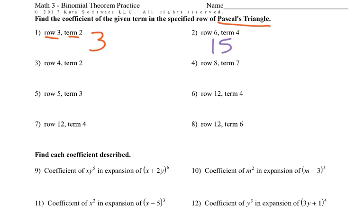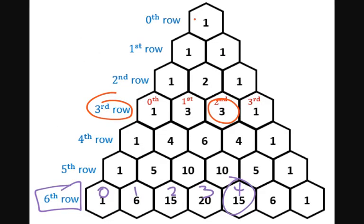Row four, term two: down to the fourth row, zero, one, two — so it would be six.